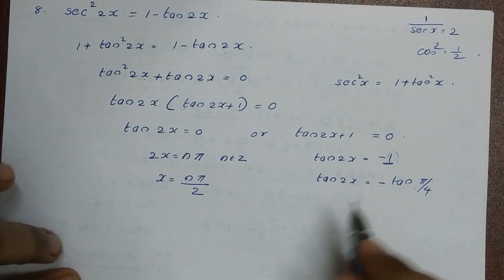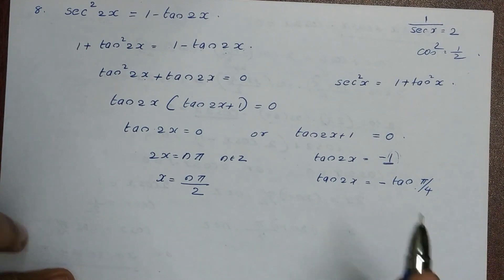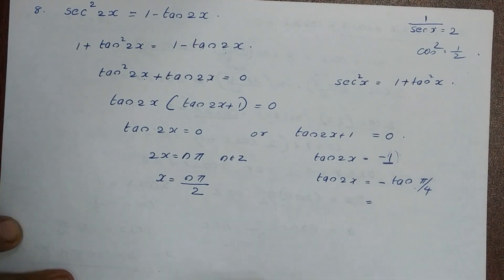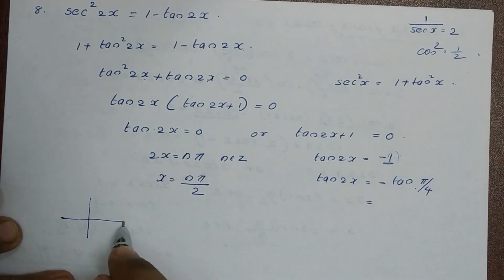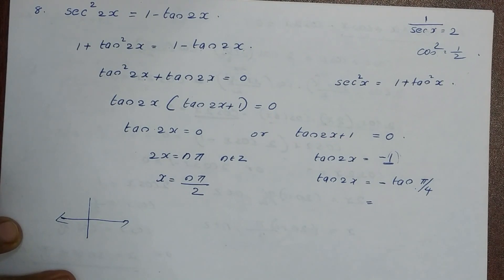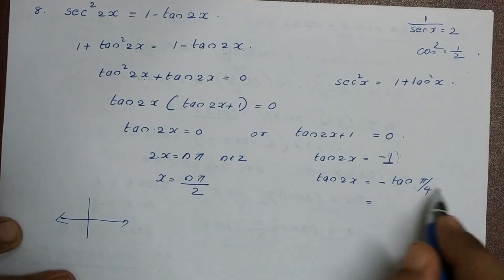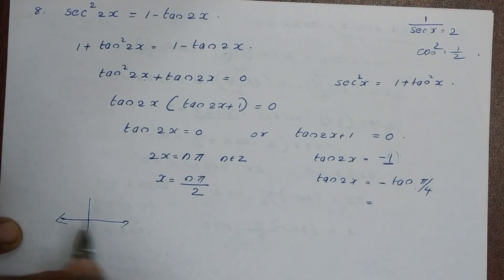So either tan2x equals 0 or tan2x plus 1 equals 0. For tan2x equals 0: 2x equals nπ, so x equals nπ/2. For the second case tan2x equals minus 1, the reference angle is π/4 since tan(π/4) equals 1.